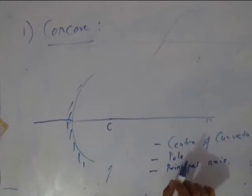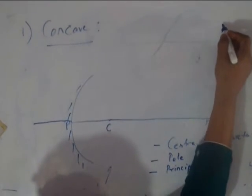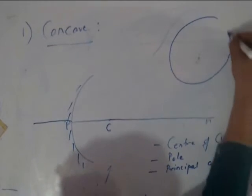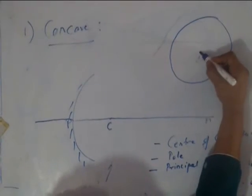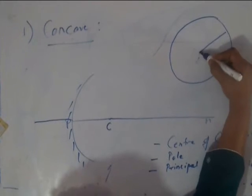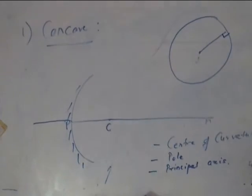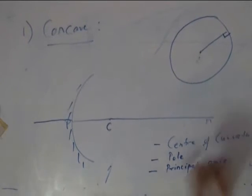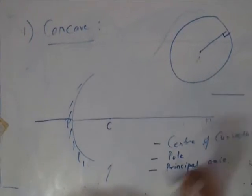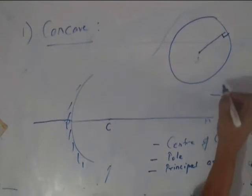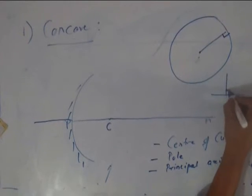Now, remember one thing. In mathematics either you have done it or you will do it in future, that for a circle, the line joining from the center to the circumference, obviously it is a radius, is always perpendicular to the circumference at that point. You see, for a plain surface, if I tell you to draw a normal, it is very easy. This would be normal and you would make it the way you normally do.